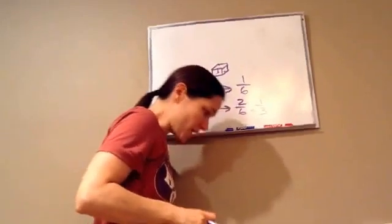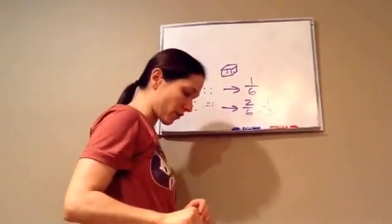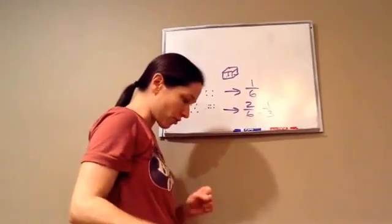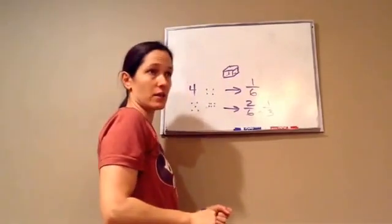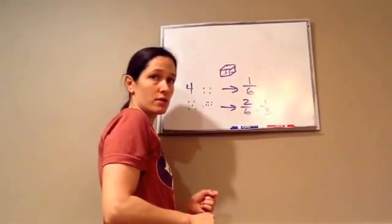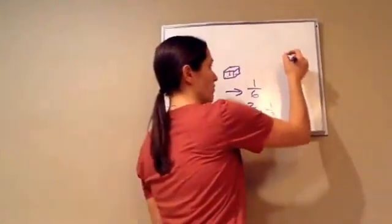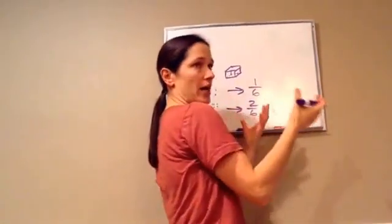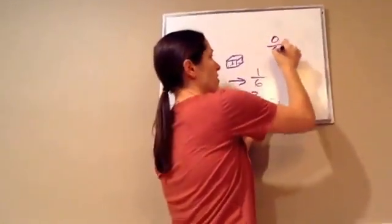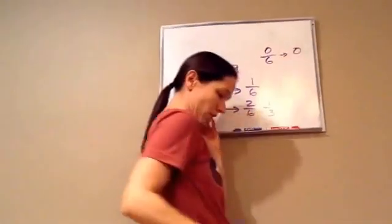What about this one? What is the probability of rolling a number greater than 6? 0. If we want something greater than 6, well, the die doesn't go over 6. So it's 0 out of 6, which is 0.